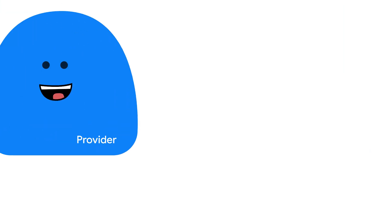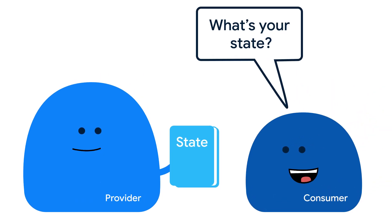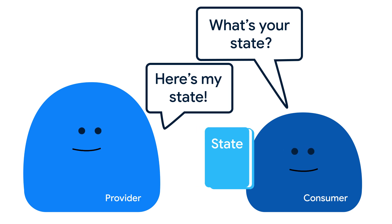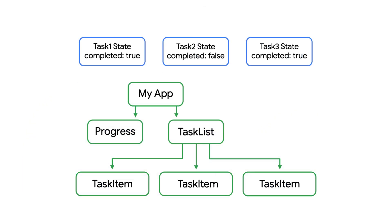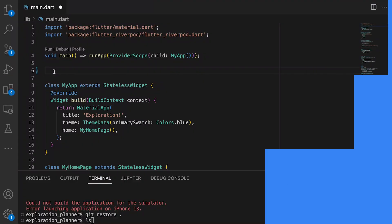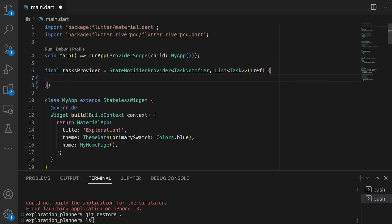RiverPod is one of the many state management packages available for Flutter. It's built on the premise of having providers — objects that encapsulate a piece of state, also known as data, and allow listening to that state — and consumers, which are objects that allow developers to interact with and read from providers. Instead of storing each task's state within the task item, we can give it to a provider called task provider to manage its state. Specifically, we're using a StateNotifierProvider, which consumers can listen to. It's RiverPod's recommended solution for managing state that may change in reaction to a user interaction — perfect for our task items.